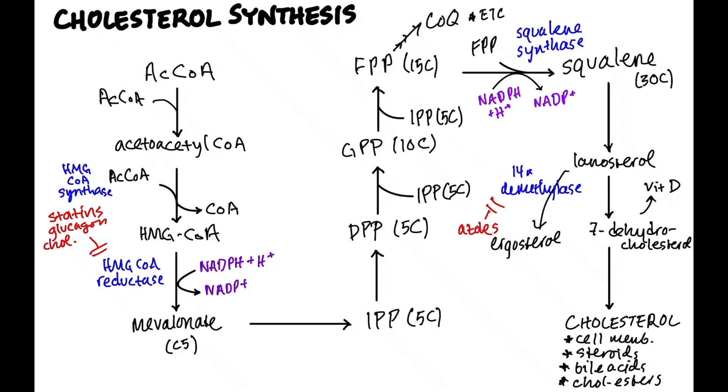The important things to know are HMG-CoA reductase, where that fits in, the fact that statins block it. And then I would know a thing or two about going from squalene to cholesterol, that in fungal cells, lanosterol goes to ergosterol through the enzyme 14-alpha-D-methylase, and that azoles block that step. And then also that 7-dehydrocholesterol is the precursor for cholesterol and also the precursor for vitamin D.